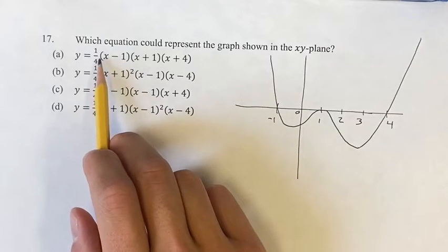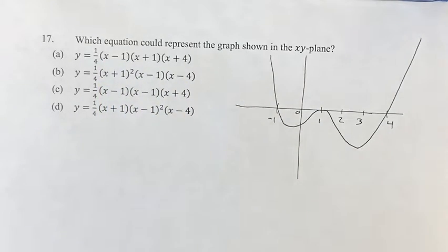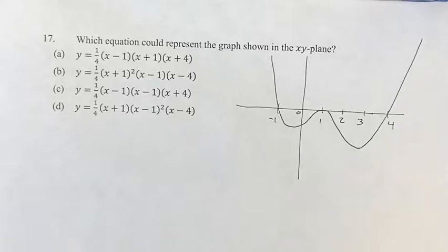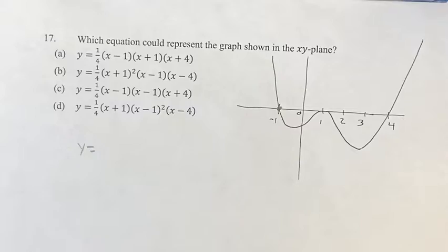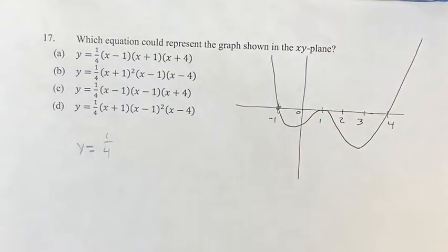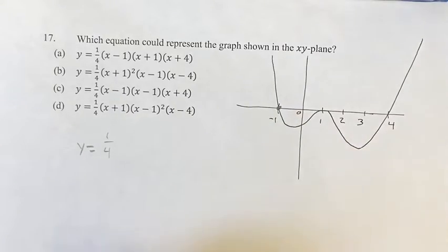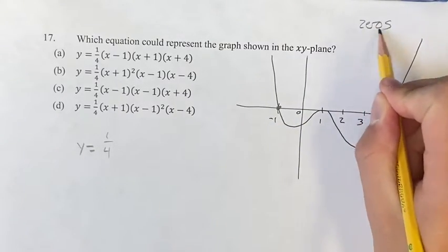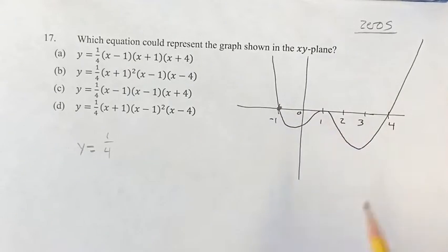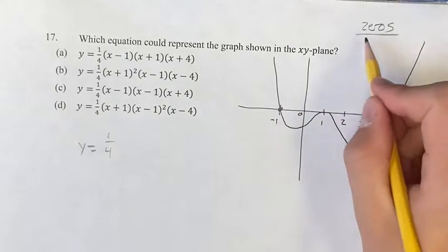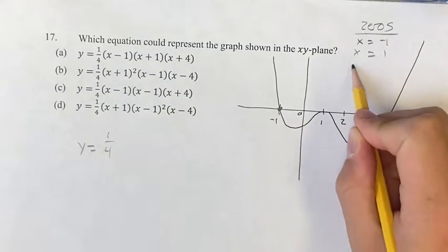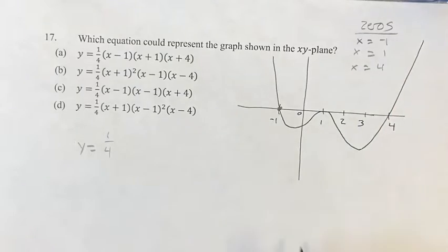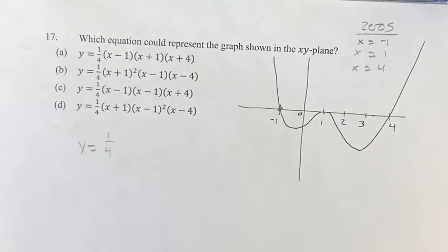So this information right here, these factors that are all multiplied by each other, these are going to represent the zeros of this function. So if we look at this, we have y equals and then there's going to be a factor in front, it's 1/4 so we can assume that's what it's going to be. And then we have zeros, or x-intercepts, solutions, whatever you want to call them. We have x equals -1 right there, we have x equals 1, and there we have x equals 4, places where this curve is intersecting the x-axis.